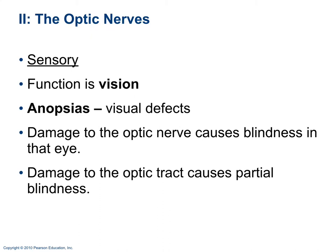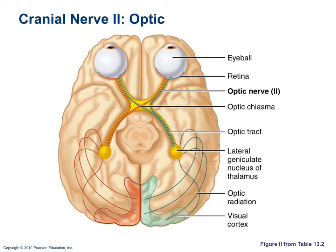Cranial nerve 2 is the optic nerve — also sensory — and its function is vision. Visual defects are called anopsias. Damaging the optic nerve causes blindness in that eye, while damaging the optic tract causes partial blindness, because the optic nerves contain components from both optic tracts due to crossover at the optic chiasma. Cutting the optic nerve severs both contributions to that eye, causing complete vision loss.